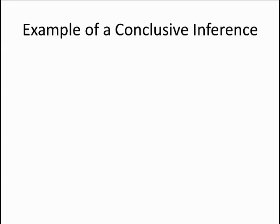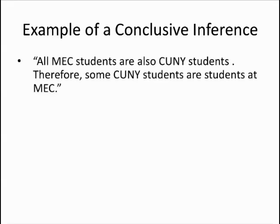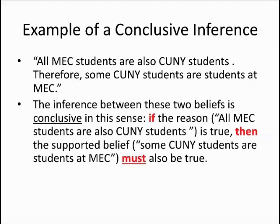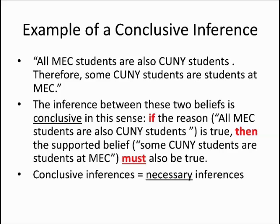Let's now move on to considering some types of inference we might encounter in the domain of argumentation. Logical thinkers distinguish between inferences which are conclusive and those which are not. In a conclusive argument, such as the one on the screen right now, the conclusion follows necessarily from the presumed truth of the premises. If it is true that all MEC students are also CUNY students, then it must be true that some CUNY students are students at MEC. This follows conclusively or necessarily from the premise, provided that it's true.